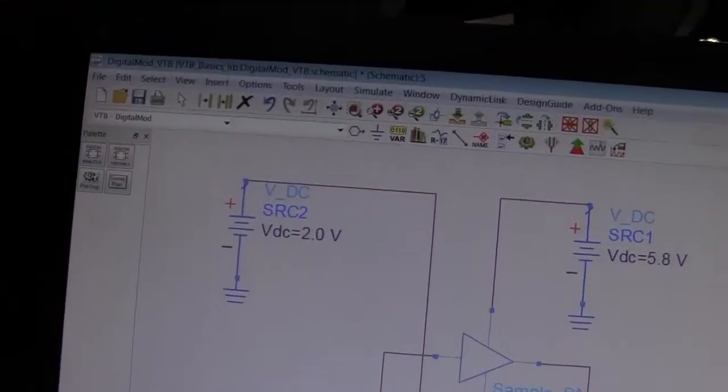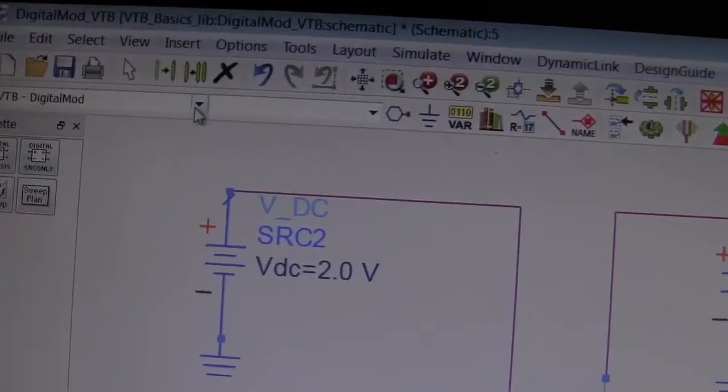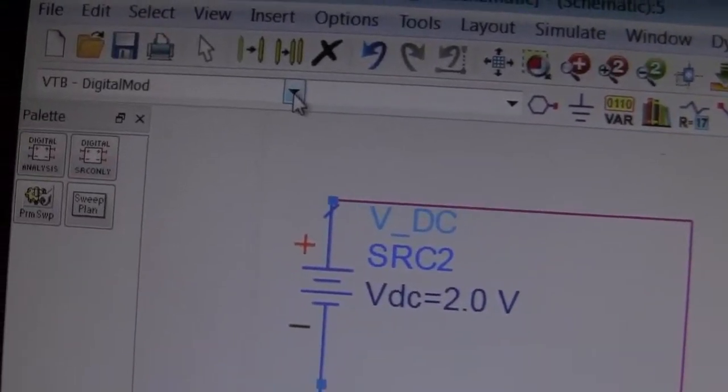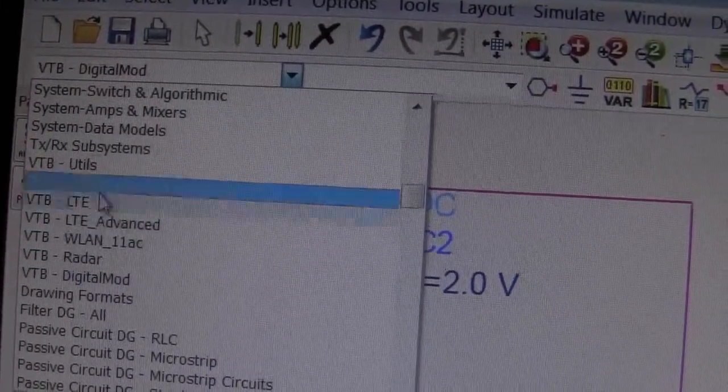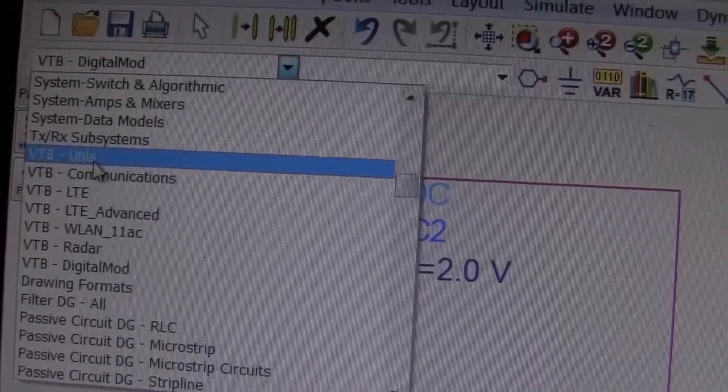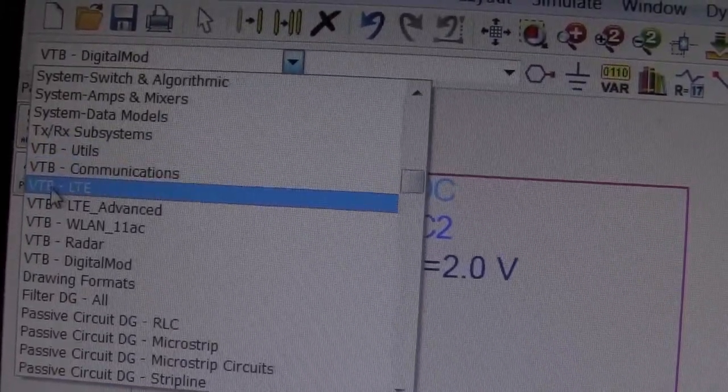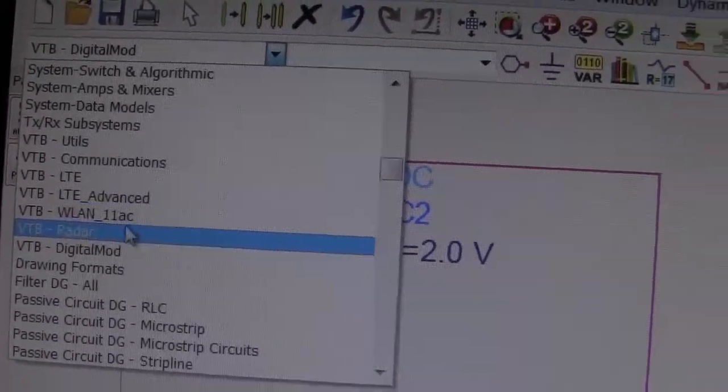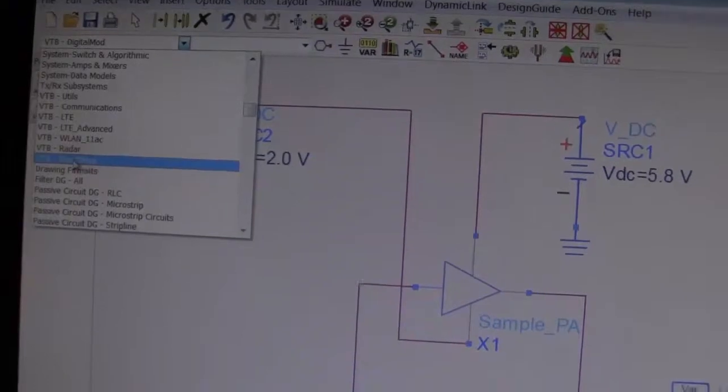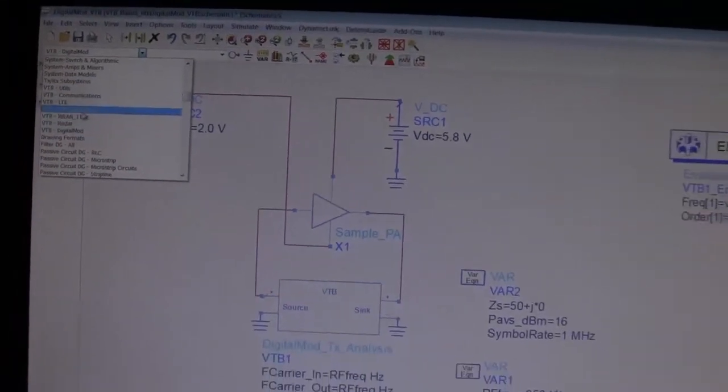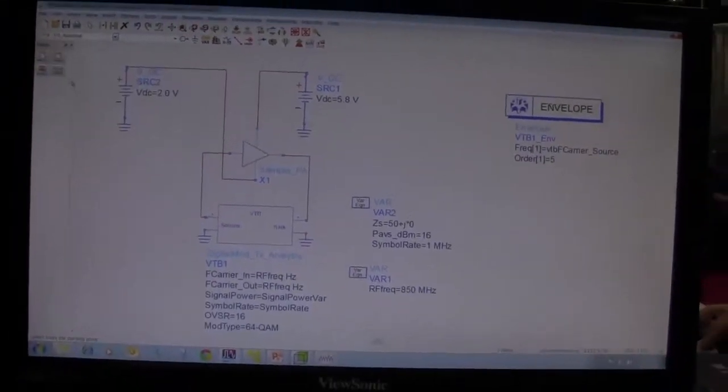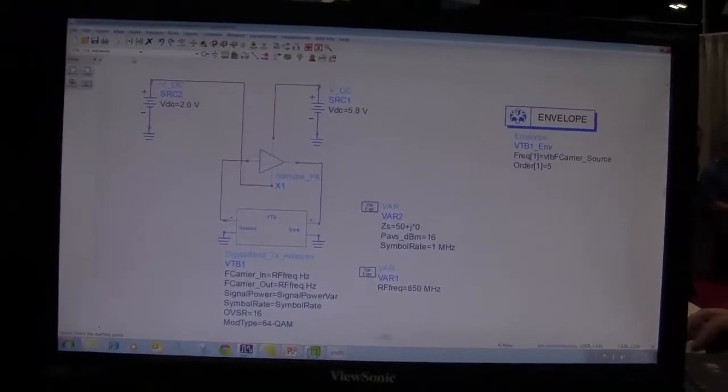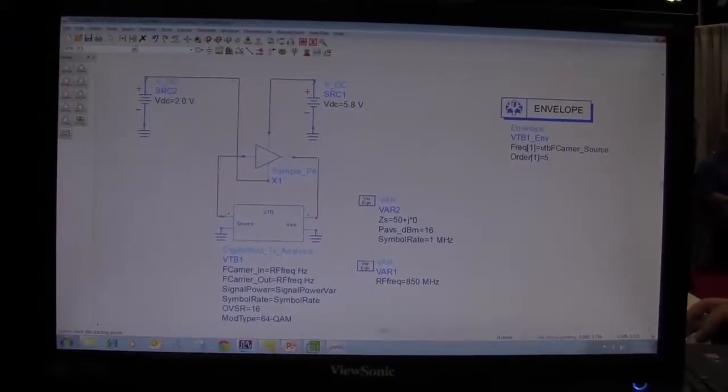This is where you access these templates or test benches. Notice also there is VTB utilities, VTB communications—we have LTE, LTE advanced, WLAN 11AC, radar, all these latest formats. Here's the LTE advanced menu, here's the LTE, and you can include all these test benches in the schematic.